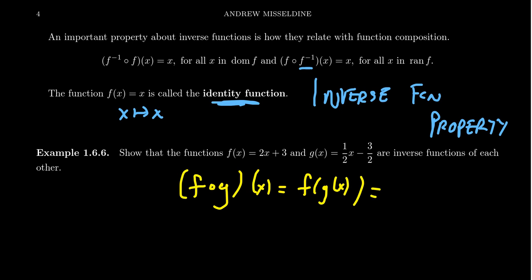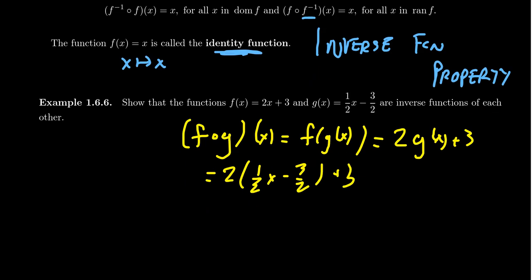Well, F of X just means 2X plus 3. So F of G would be 2G of X plus 3. And then inserting the definition of G of X, which we see right here, we're going to get 2 times 1 half X minus 3 halves. And then we add 3 to that. Now let's work to simplify this expression.